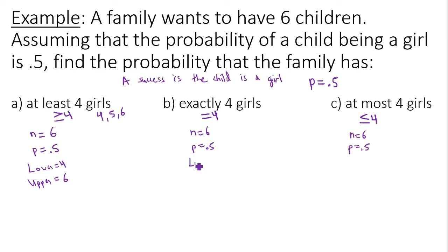Exactly four girls, the lower and upper bound would be looking at just four. Lower bound, upper bound is exactly the same.